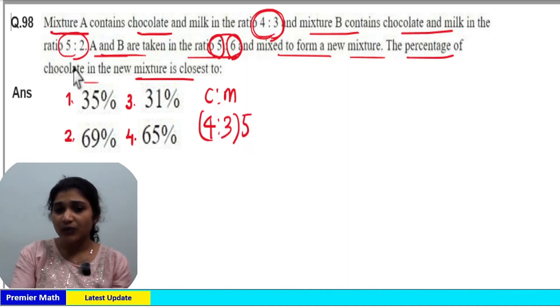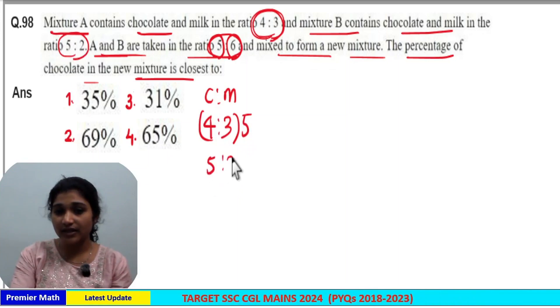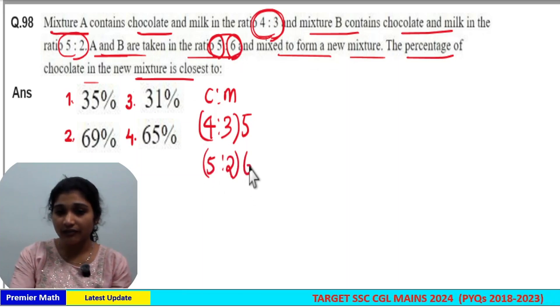Even if you take just one drop from mixture B, that one drop will contain chocolate and milk in the ratio of 5 to 2. But here you are taking out 6 parts, so multiply it with 6.